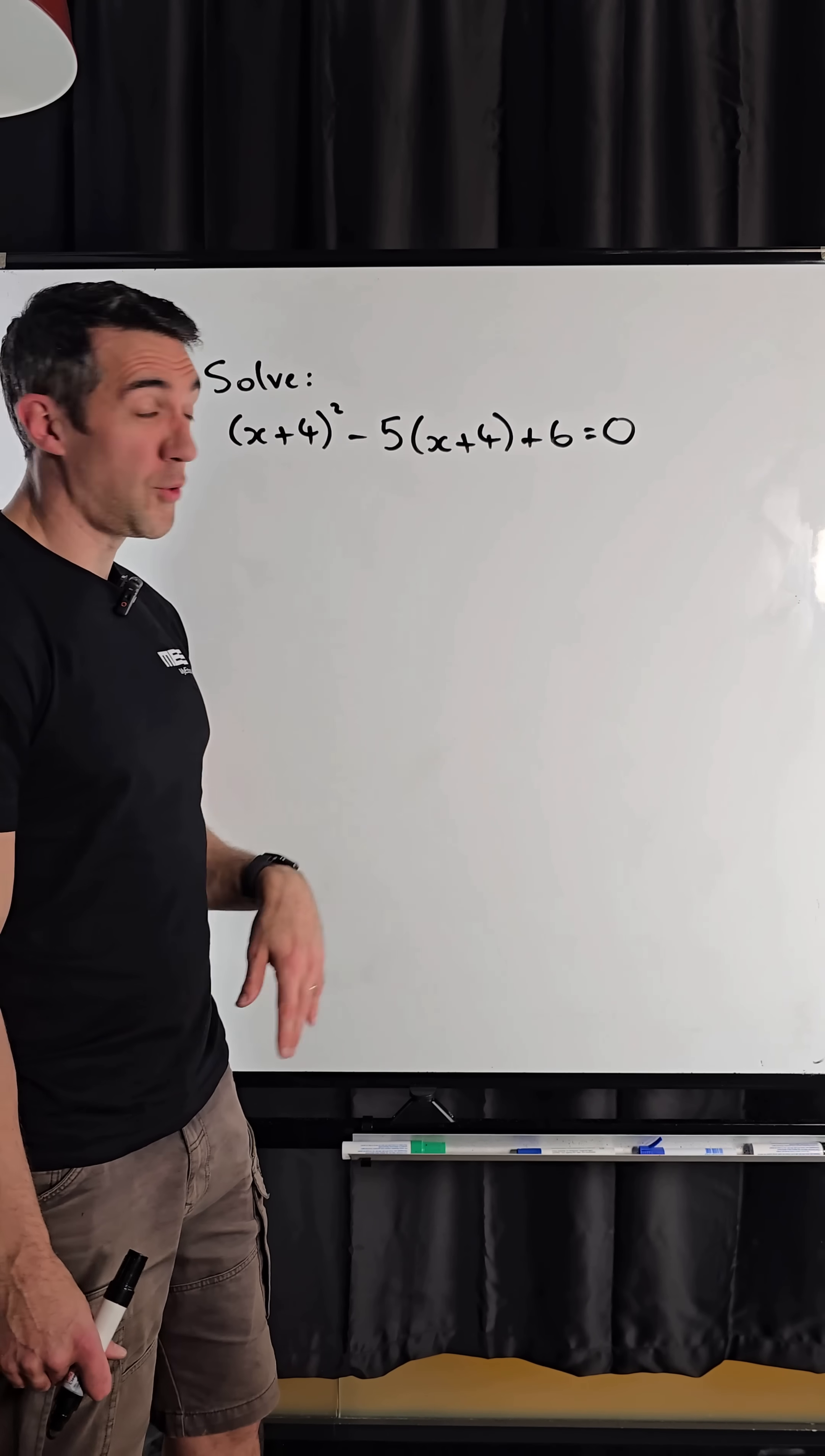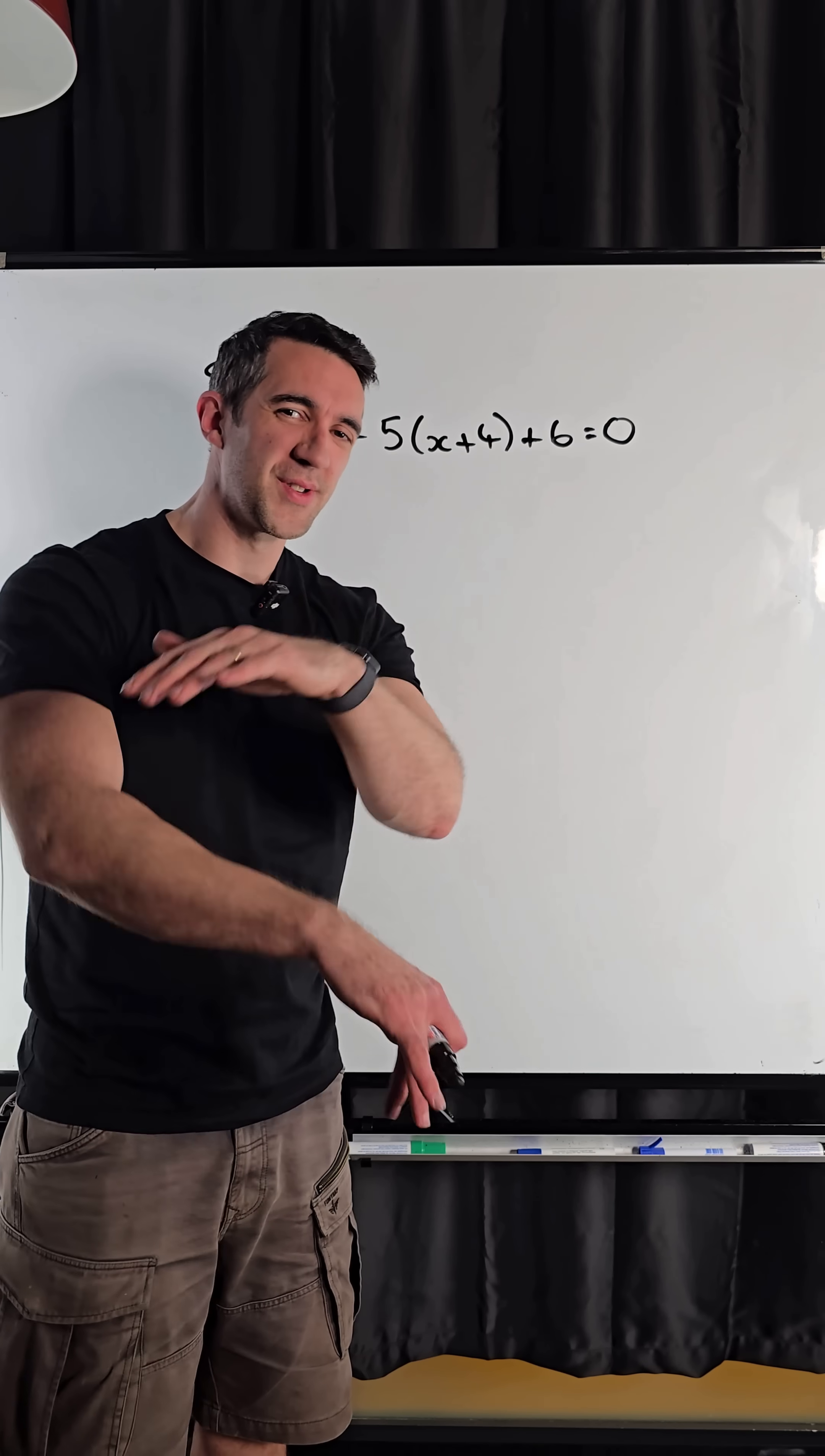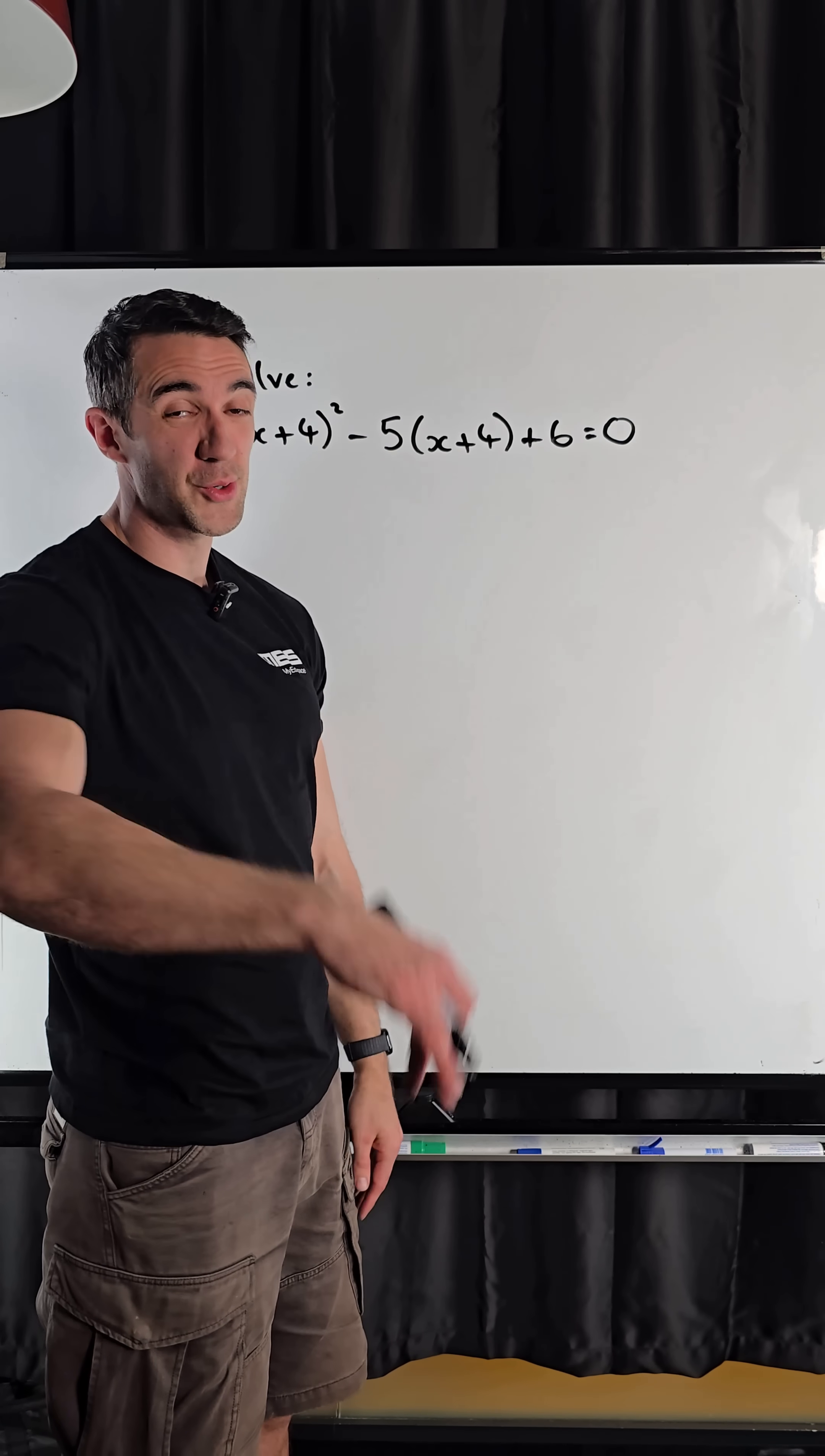So I've got x plus 4 squared minus 5 times x plus 4 plus 6 equals 0. Everyone's instinct is always going to be, I've got to expand those brackets. We start writing out double brackets, we're not doing that. Got to do it properly.